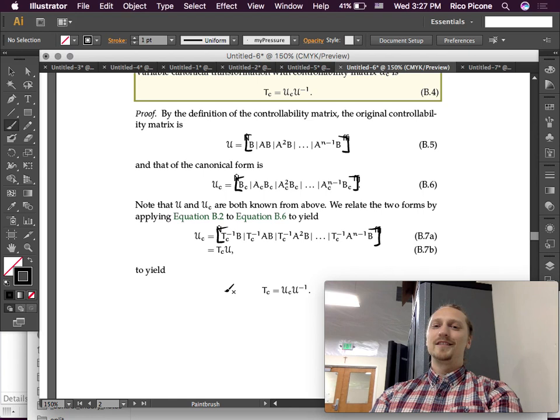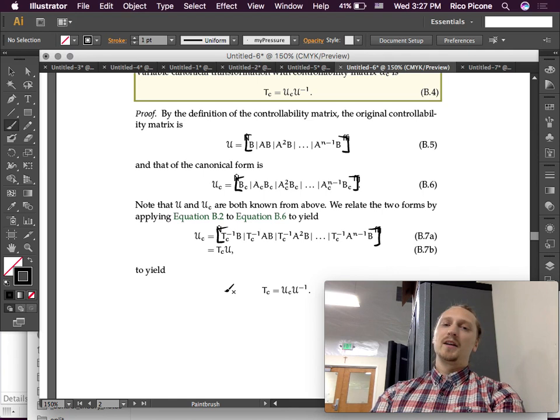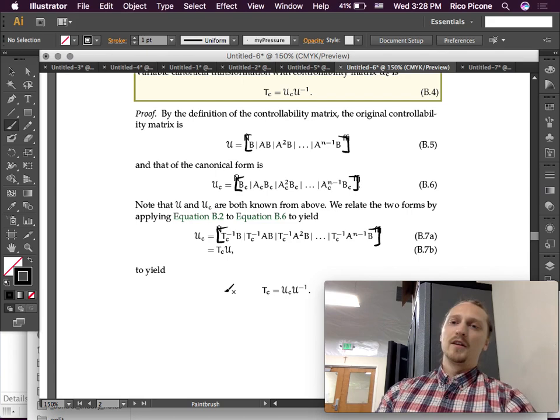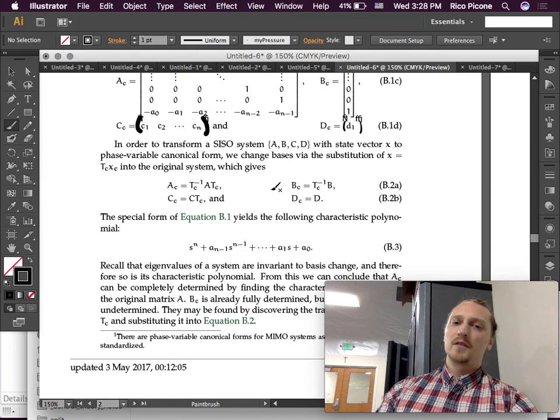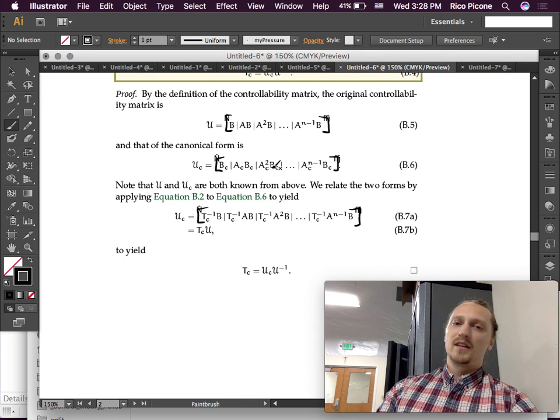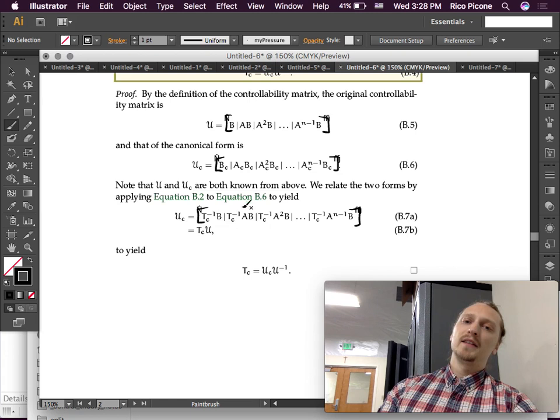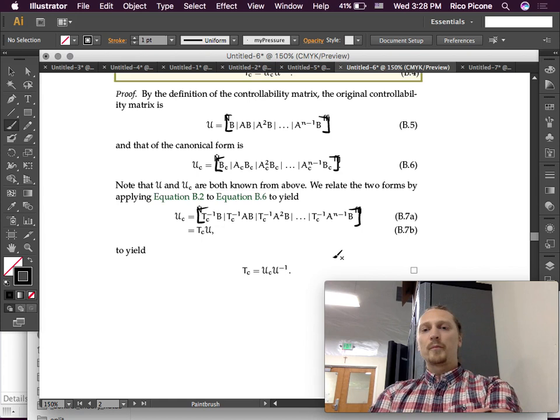So, we can know them and we can then plug these in. So, we relate the two forms by applying equation B2 to equation B6 to yield. So, B2 is this transformation to B6, which is this UC. And we yield this. So, we plugged in what BC is in terms of B. And what AC is in terms of A. And what BC is in terms of B again. Et cetera, et cetera. Keep going.